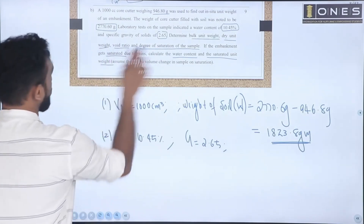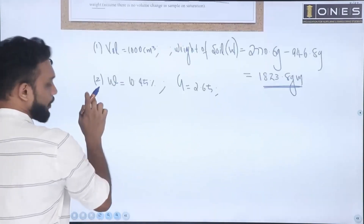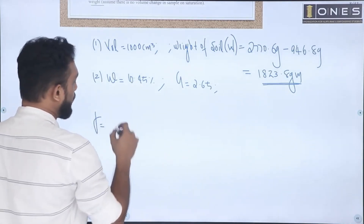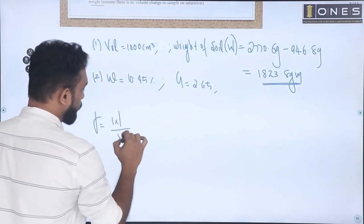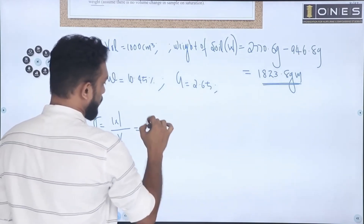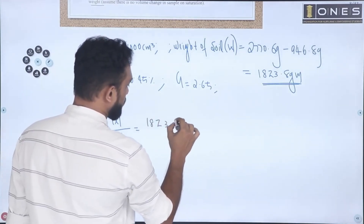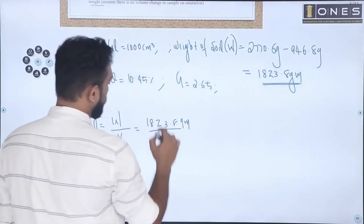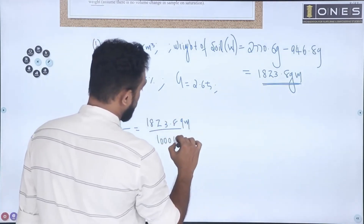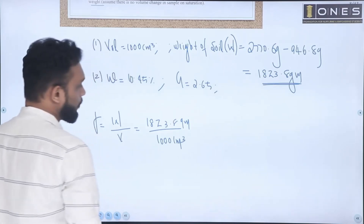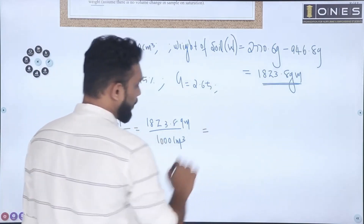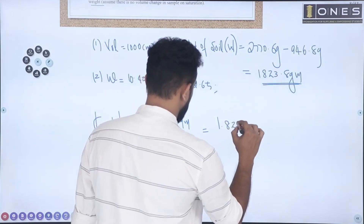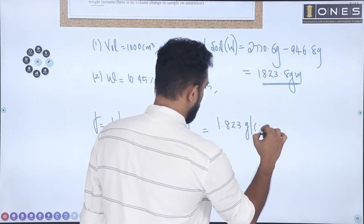The first part is bulk unit weight. Bulk unit weight represents the existing condition of the soil — it is weight of soil divided by volume of soil. The weight of soil is 1823.8 grams divided by the core cutter volume of 1000 cm³, giving the answer in grams per cc.